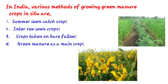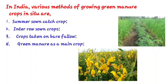The third method is crops taken on bare fallow. Green manure crops like dhaincha, sun hemp, guar, cowpea, and dhaincha are grown and buried during the kharif season instead of leaving the land fallow or growing an alternative kharif crop.